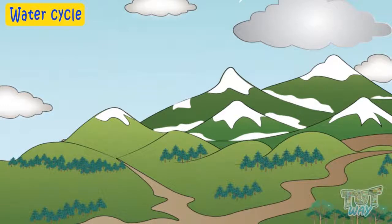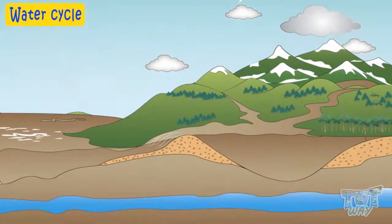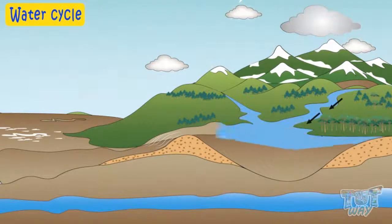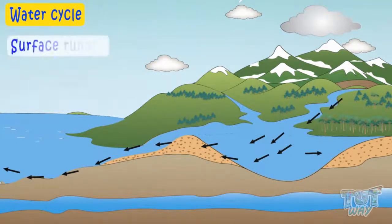Precipitation such as snowfall accumulates water on hills and mountains as ice caps and glaciers. When the weather changes, the water accumulated on hills and mountains in the form of ice or snow melts back and flows to the ground as rivers and streams. This flowing down of water is called surface runoff.